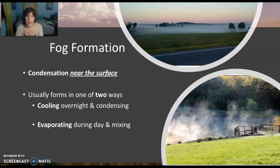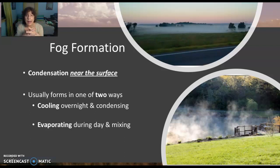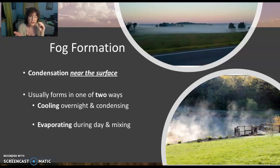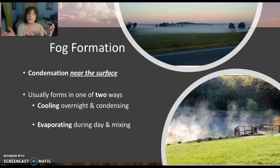We've talked about condensation at the surface and dew point as part of that condensation. Now we're going to talk about condensation that is near the surface but above the surface, in terms of fog. Fog is usually formed in two different ways: by either a cool surface, which is called a cooling fog, or a warm surface, which produces an evaporative fog.